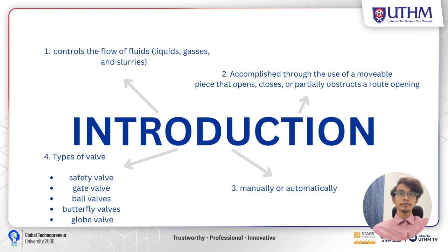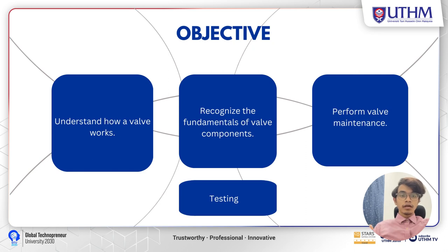Basically, a valve can be operated manually or automatically. Manual operation uses a manual or power operator to operate the valve, and automatic operation is controlled by the control room. Our objectives for the valve operation are: first, to understand how a valve works; second, to recognize the fundamental valve components; third, to perform valve maintenance; and fourth, testing.